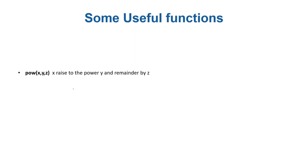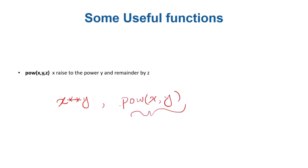The next function is pow. You can compute power using the double-star operator — for example, x**y gives x raised to the power y — or equivalently by calling pow(x, y). But pow can also take three arguments: pow(x, y, z) computes x raised to the power y, then takes the remainder by z and returns that result.